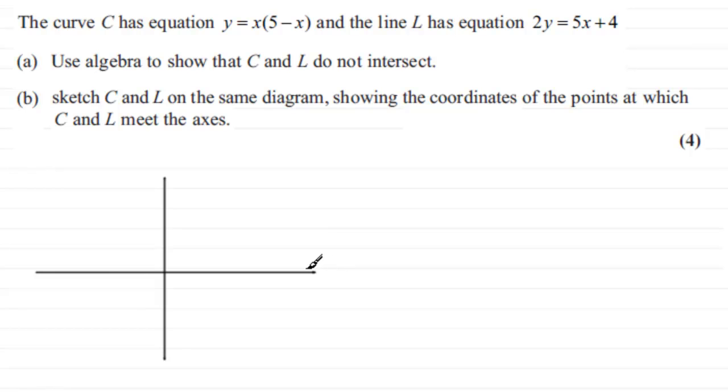So we've got our x axis and our y axis and if we start with C, we'll do it in red, the curve y equals x times 5 minus x.